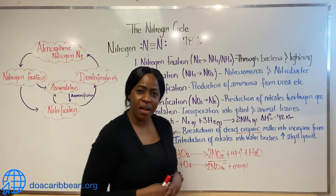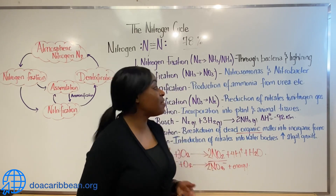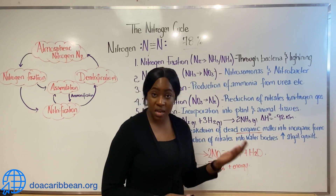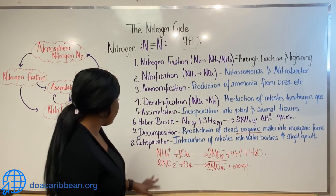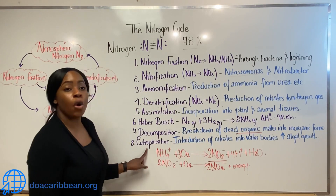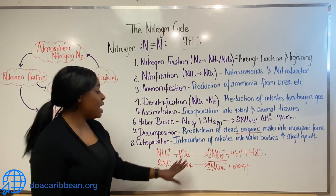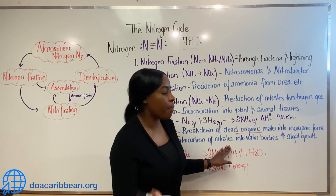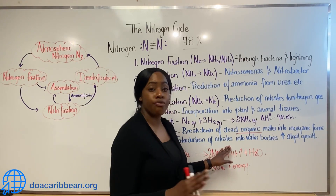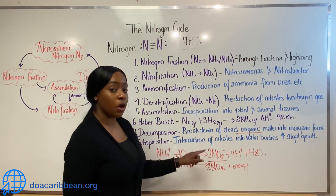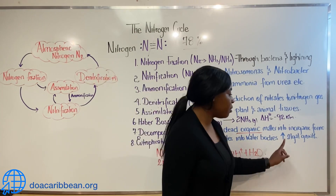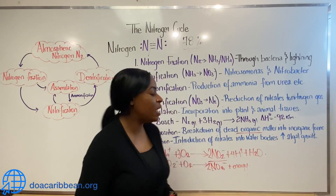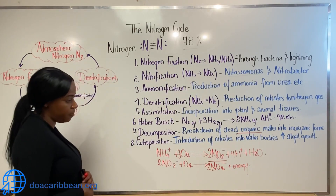Microorganisms allow nitrogen to enter and leave the nitrogen cycle. In addition, there are other processes that enable nitrogen to enter the ecosystem. For example, eutrophication, which is the introduction of nitrates from agricultural runoffs. As a result of this, there will be an increase in plant growth, especially in the aquatic ecosystem.